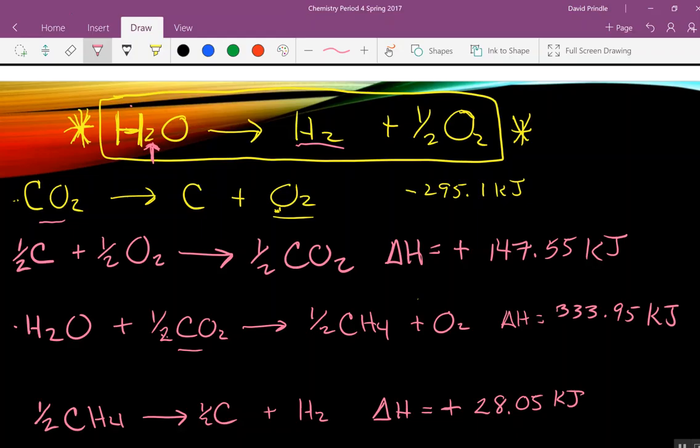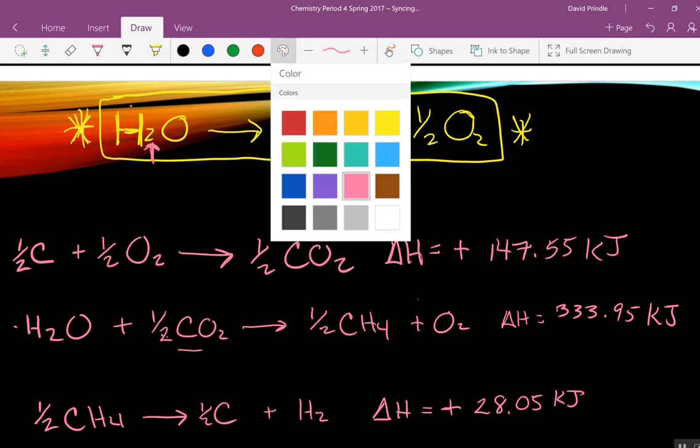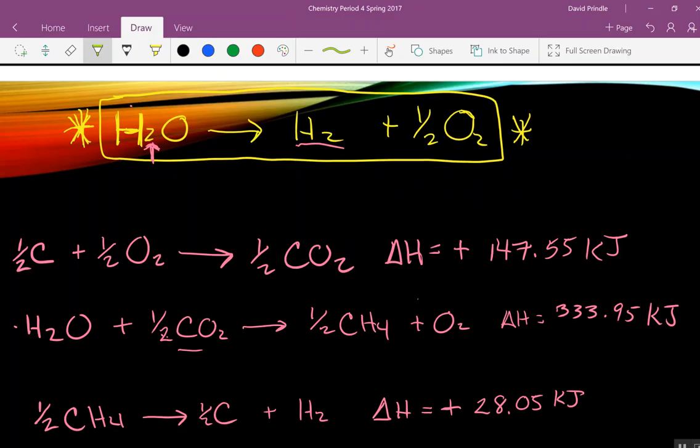Now comes the fun part. Get rid of the yellow equation. Let's change to another color. Let's try bright green. Let's start up here. I have half a carbon on the left. Do I have a half a carbon on the right someplace that I can cancel it with? Down here. You can cancel things on the left with things on the right or things on the right with things on the left. Oxygen. One half oxygen on the left. One full oxygen on the right. One oxygen minus half of oxygen gives you what? Half an oxygen over here. This one goes away.